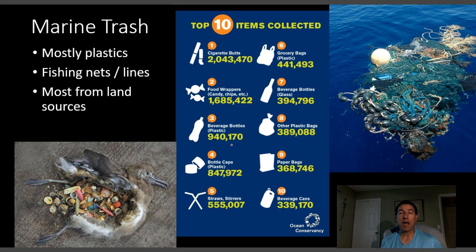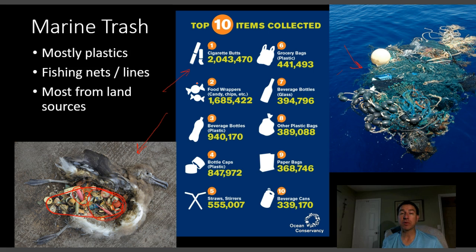Another oceanic problem is marine trash. A lot of trash floats around the ocean — most of it is plastics, much of it from land-based areas, along with lost fishing nets and fishing line. Marine mammals, sea turtles, birds, and even fish can get caught in this floating gear and be killed. This material lasts a very long time; a lot of it also gets ingested by wildlife. A dead bird in one photo had its plastic contents visible as it decomposed. The Ocean Conservancy's top collected beach cleanup items include cigarette butts at number one, food wrappers, and drinking straws.